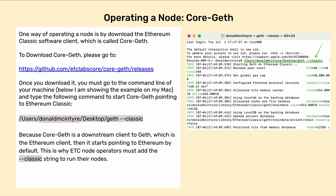Operating a Node — Core Geth. One way of operating a node is by downloading the Ethereum Classic software client, which is called Core Geth. To download Core Geth, please go to github.com/etclabscore/core-geth. Once you download it, you must go to the command line of your machine. Below, I am showing the example on my Mac. Type the following command to start Core Geth pointing to Ethereum Classic. Because Core Geth is a downstream client to Geth, which is the Ethereum client, it starts pointing to Ethereum by default. This is why ETC node operators must add the --classic flag to run their nodes.